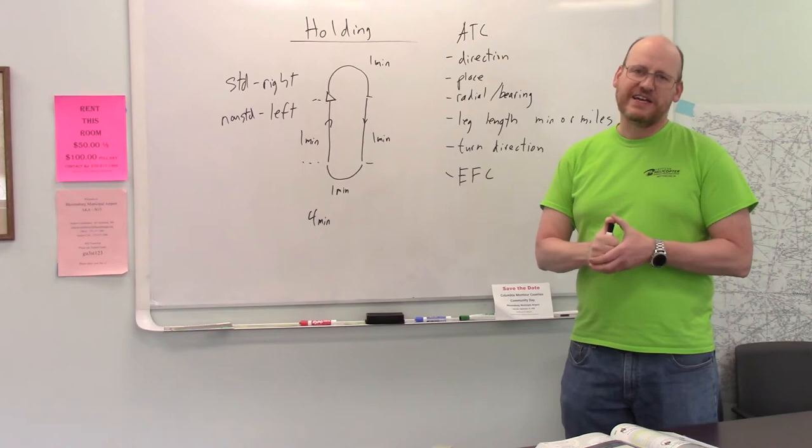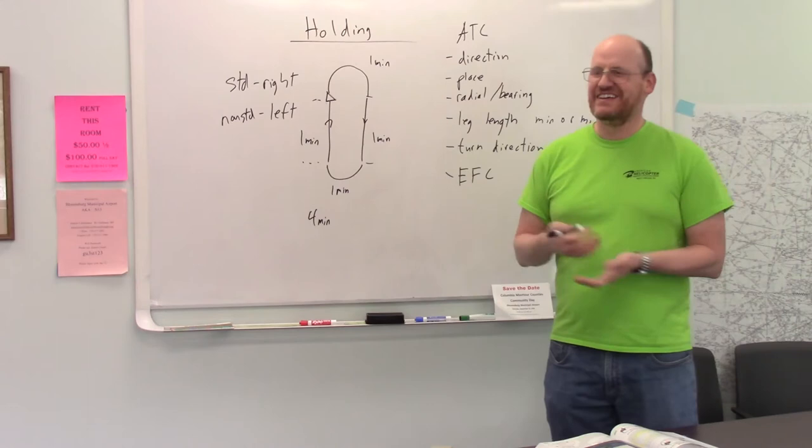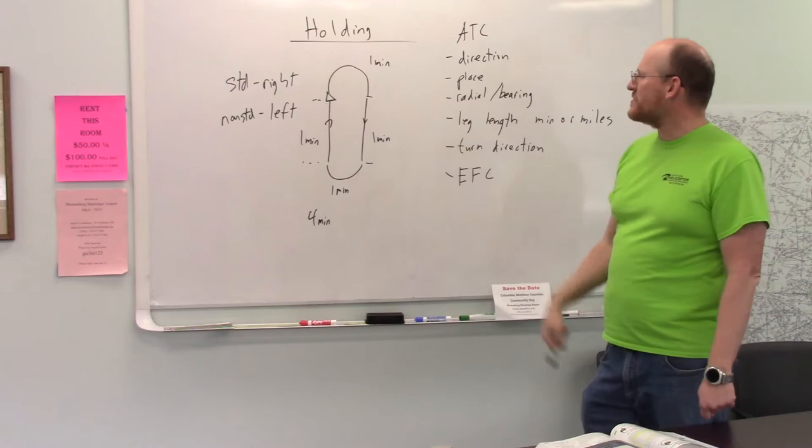In other words, if my radios die, when can I plan on leaving this hold? Or even if they don't die, when approximately do they think they're going to let me out of this hold? So, direction, place, radial, bearing.